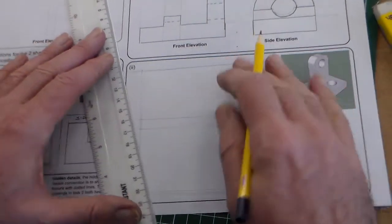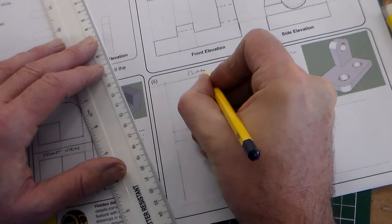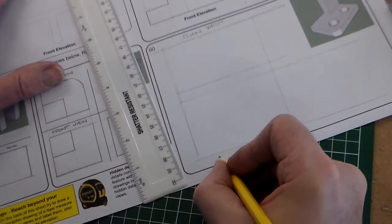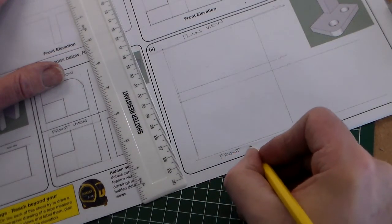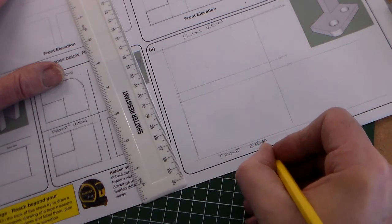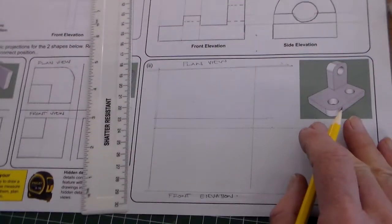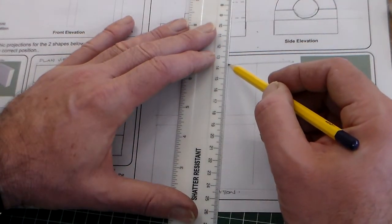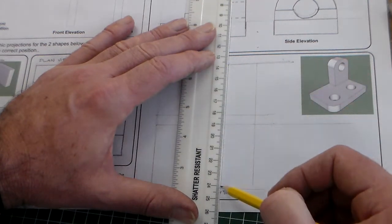So we'll have a plan view there. We'll have a front view. We'll have a front elevation there. I'm projecting this line down.